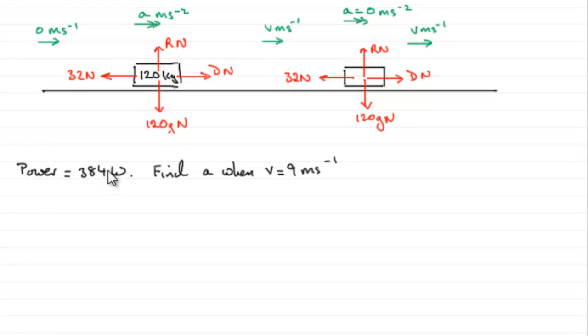Now, we know that power equals the driving force D multiplied by the velocity V. So if we just say that P equals DV, then when V happens to equal 9, we can work out what D would have to be at that point. So just substitute this into this equation along with the power.